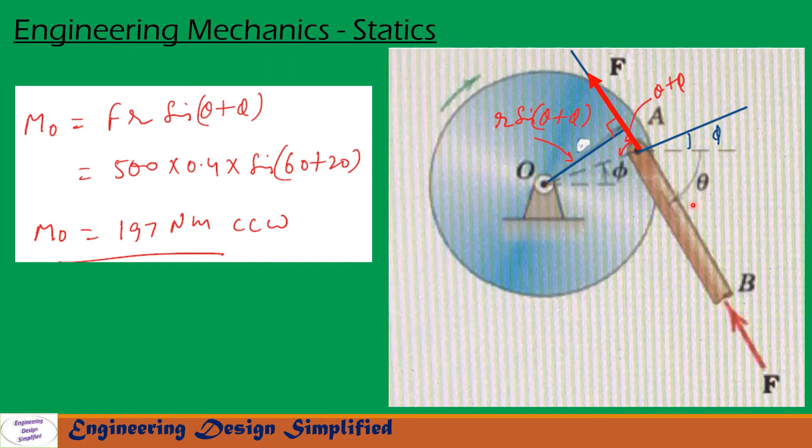This angle is theta. Since this angle is phi, then this angle will also be phi. So the total angle from this line to this coupler link will be theta plus phi. If this angle is theta plus phi, then the angle between this extended line and OA will also be theta plus phi.